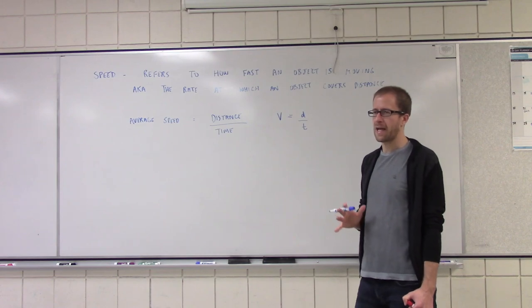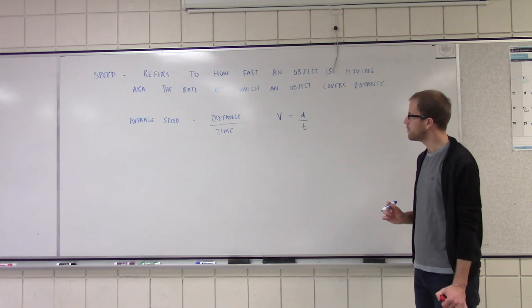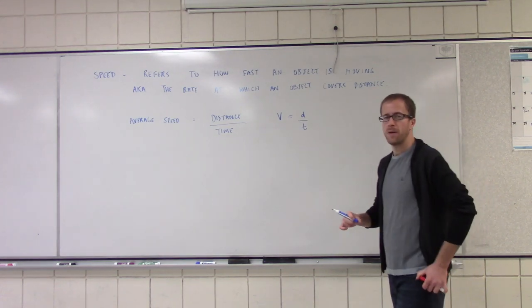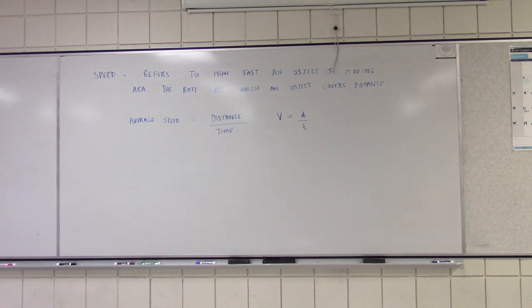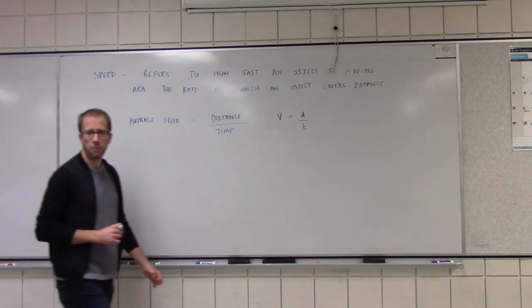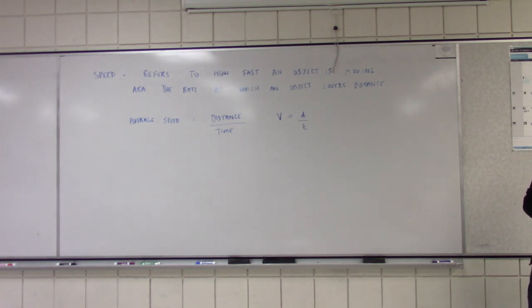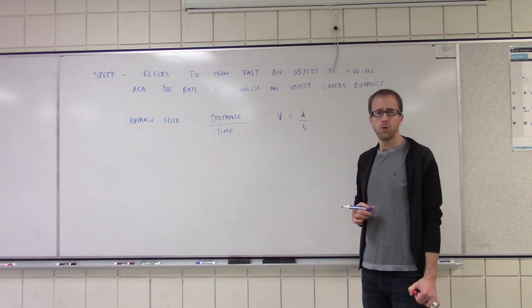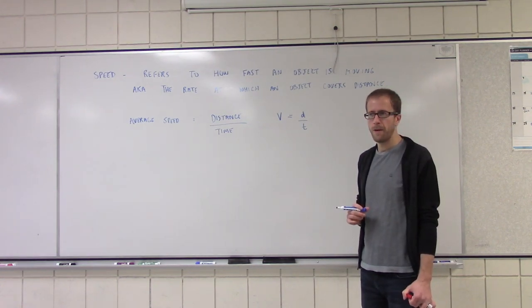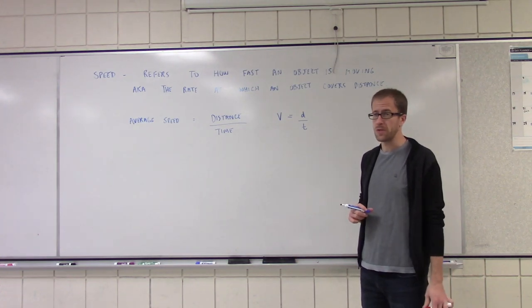I want you to get in the habit of using this little hat, and you'll see what I mean in a sec. So for example, let's say I was walking and I covered 6 meters in 3 seconds. What would be my average speed? 2 meters per second. We'll do some example problems in a bit, but it would be 2 meters per second.